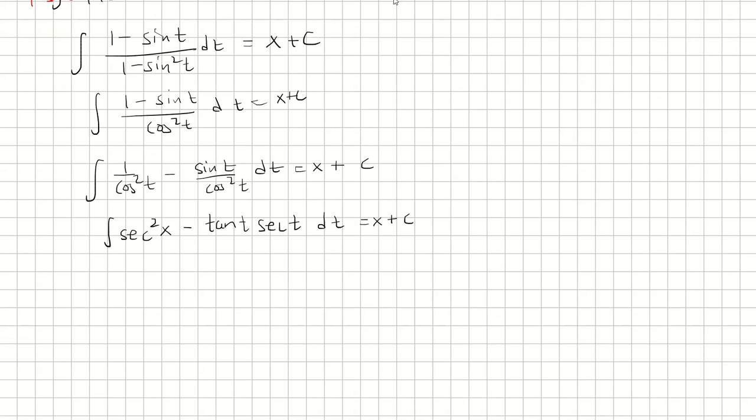Now we must take the antiderivative of this. The antiderivative of secant squared is tangent. Antiderivative of tangent secant is secant. We have plus another constant, but because we have the constant on the right side, I'm not going to bother including it.